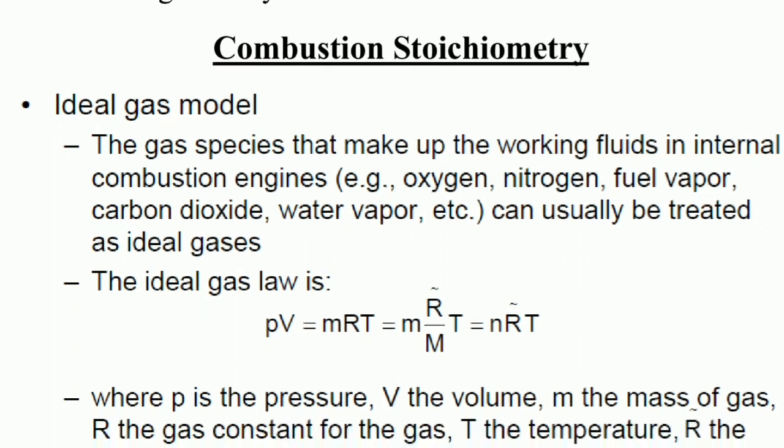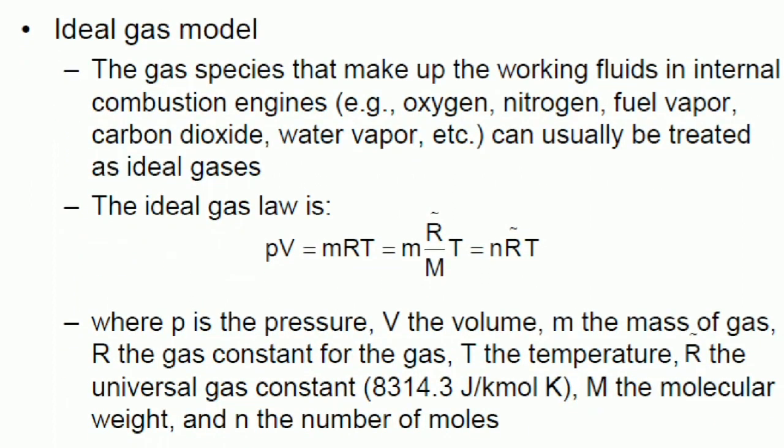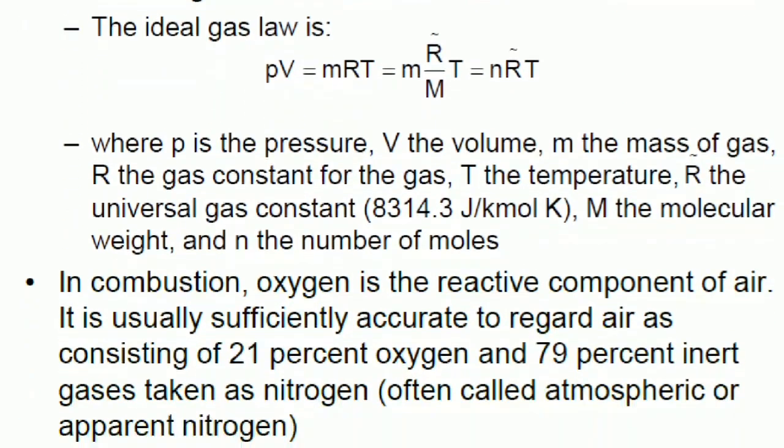Where p is the pressure, V is the volume, m is the mass of the gas, R is the gas constant for the gas, T is the temperature, R̄ is the universal gas constant (8.314 joules per kilomole per Kelvin), M is the molecular weight, and n is the number of moles.